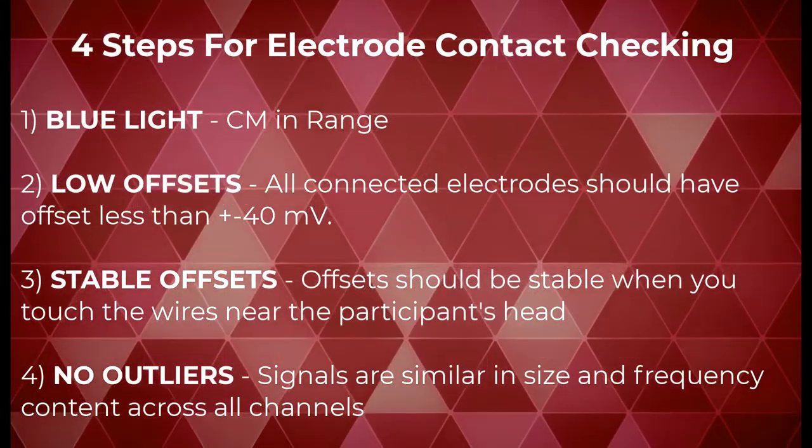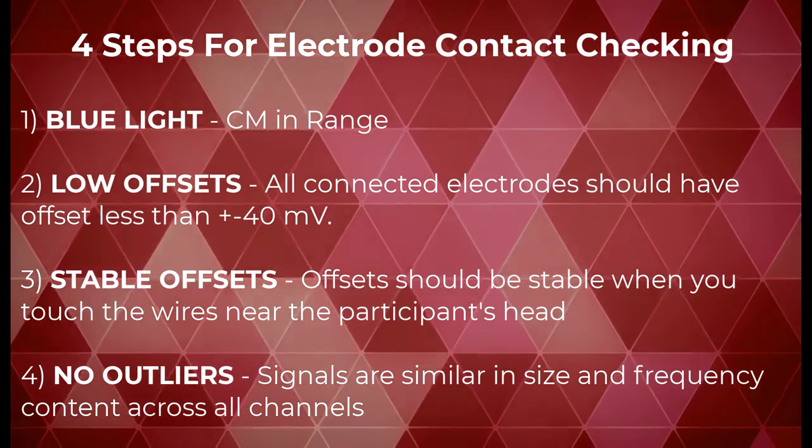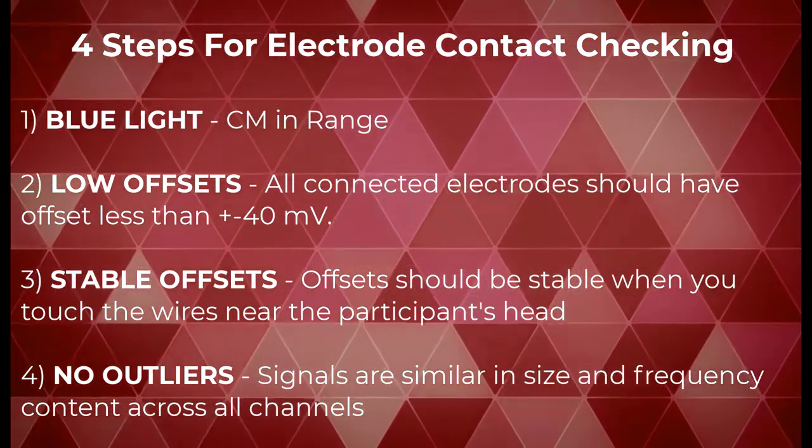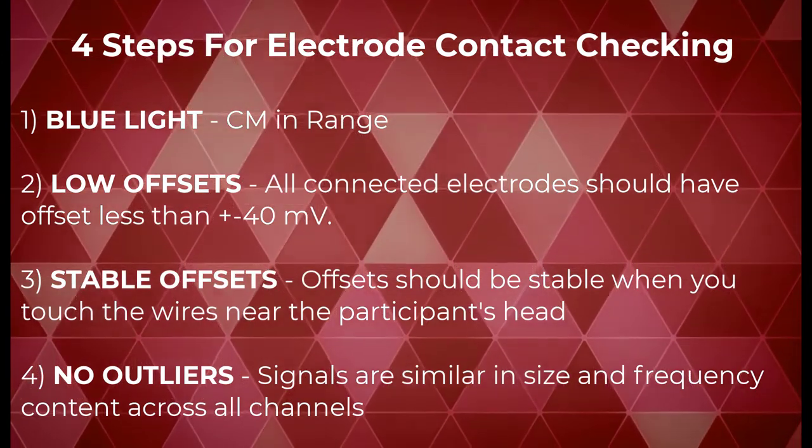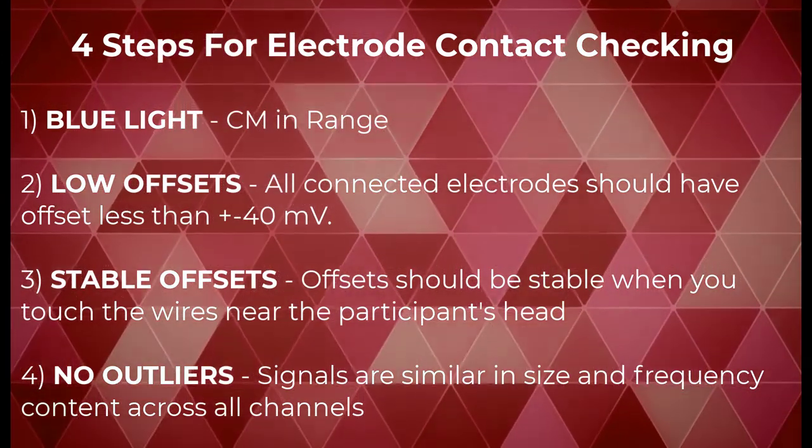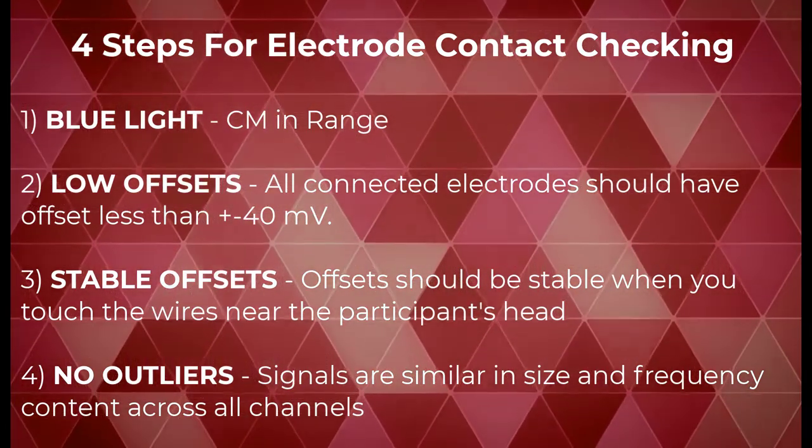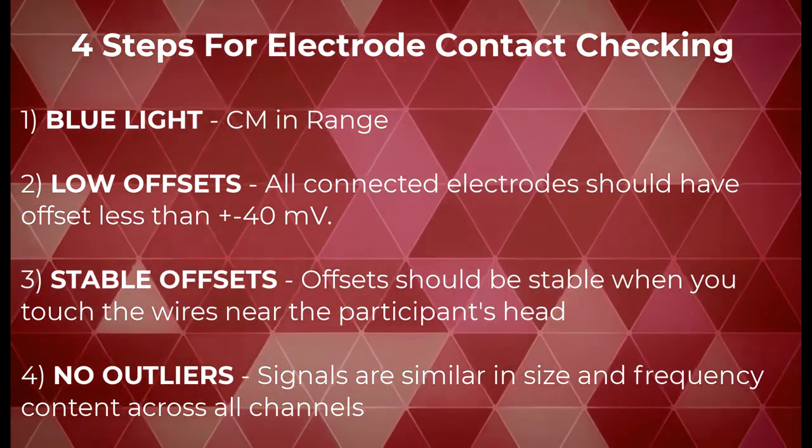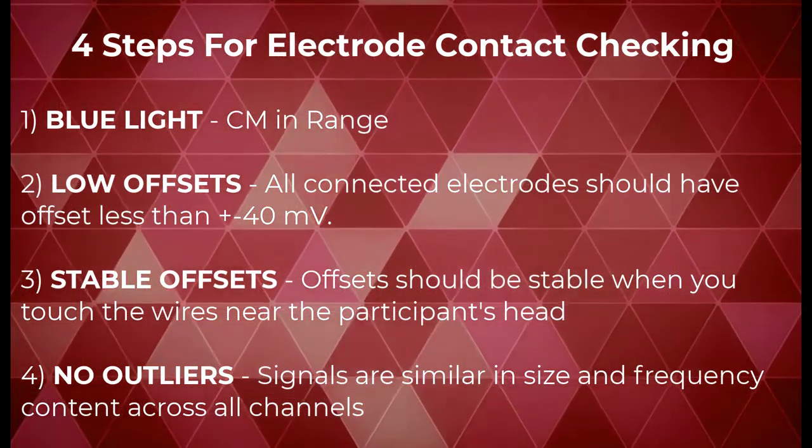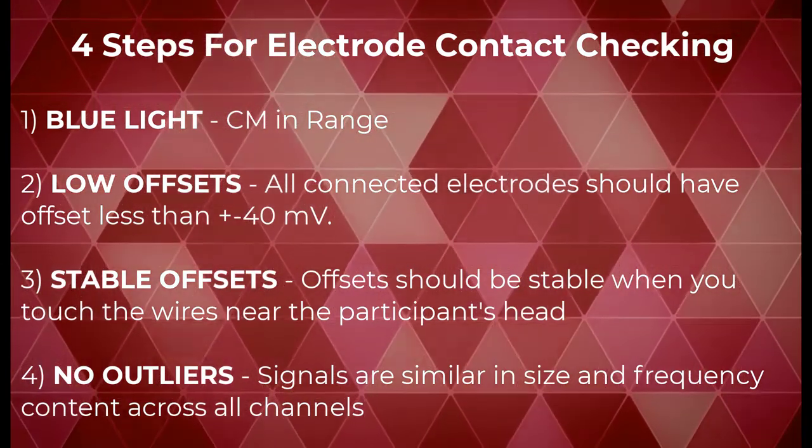Next comes a four-step electrode contact check. One, blue light, meaning CM is in range. Two, low offsets, meaning all connected electrodes should have offset less than plus or minus 40 millivolts. Three, stable offsets. Offsets should be stable when you touch the wires near the participant's head. Four, no outliers. Signals are similar in size and frequency content across all channels.